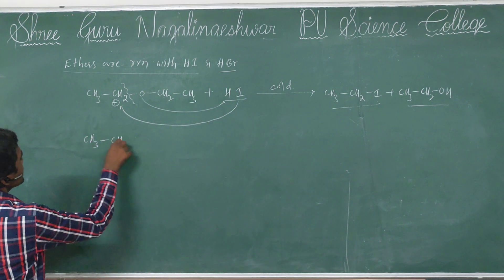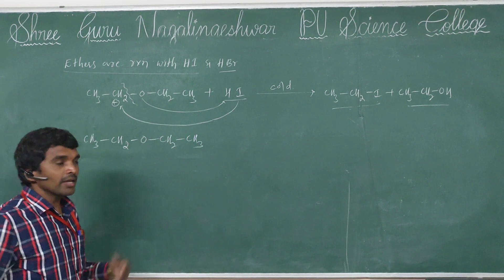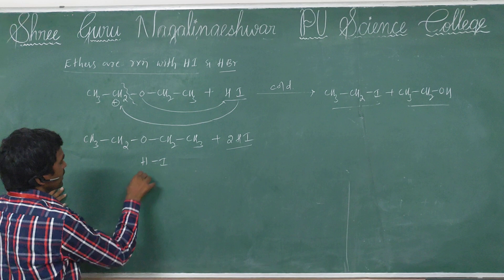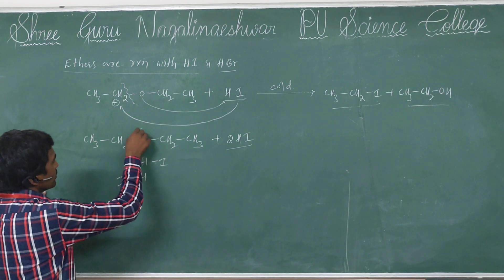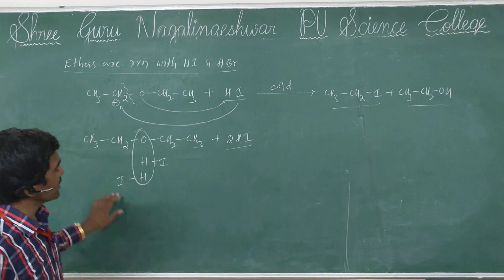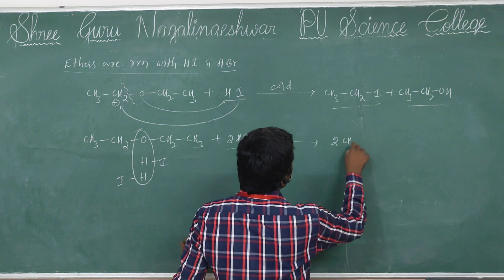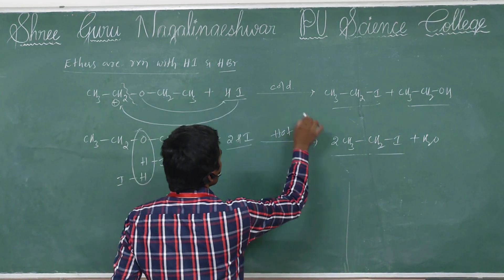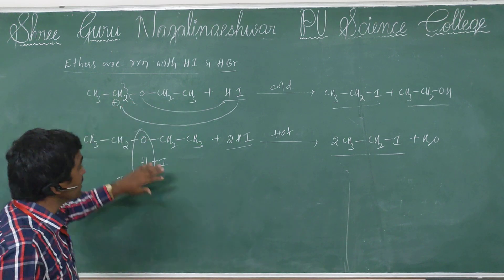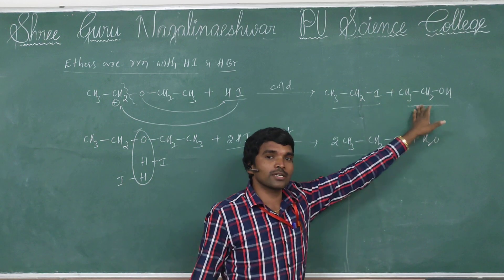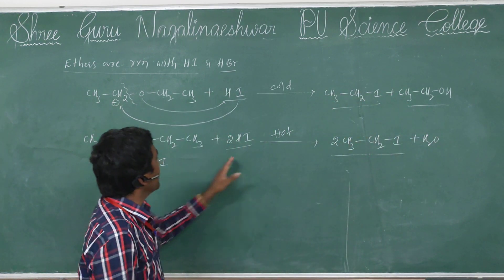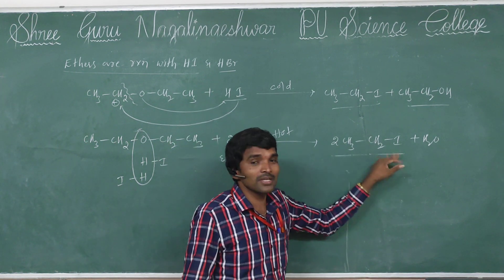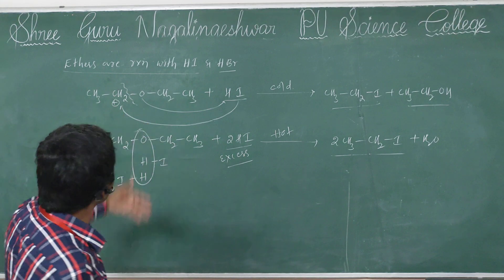If I take excess — that is 2 moles of HI — here water is eliminated, then formation of 2 moles of ethyl iodide plus water. This reaction takes place under hot conditions. So this is a symmetrical ether reaction: under cold condition, 2 products are formed — ethyl iodide and ethyl alcohol. Under hot condition, or when excess HI is mentioned, 2 moles of ethyl iodide are formed.